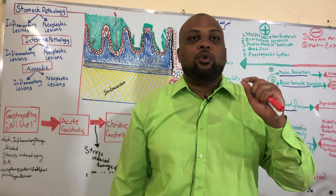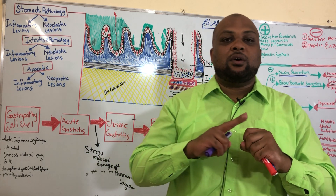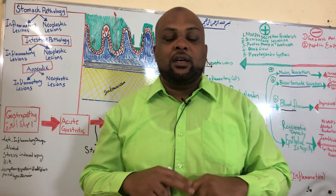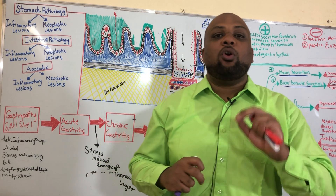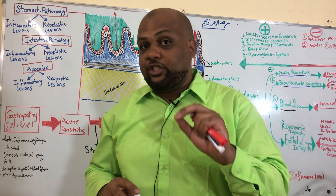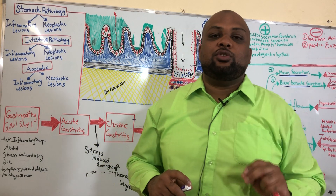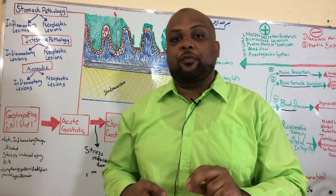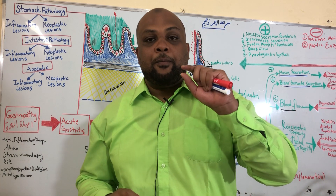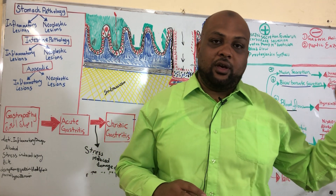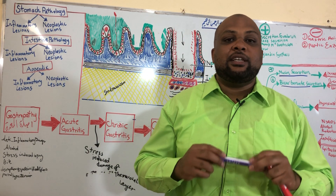There is another issue when parietal cells are targeted by the immune attack. In addition to secreting intrinsic factor — which is important for the absorption of vitamin B12 in the intestine — parietal cells also secrete acid.